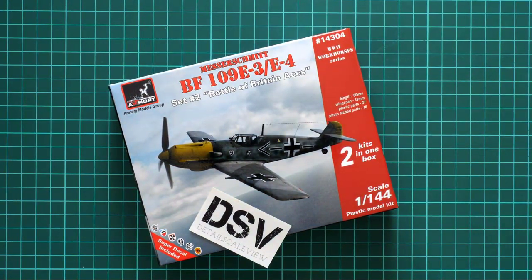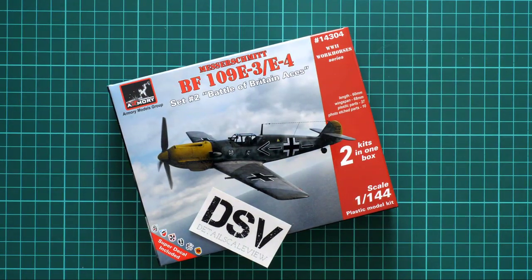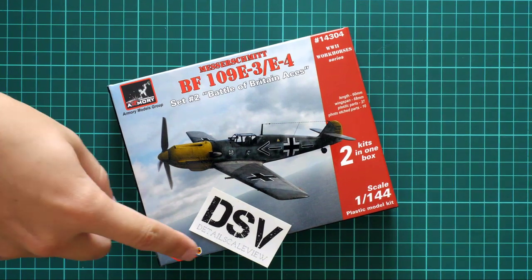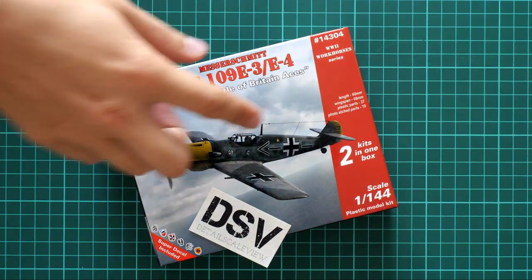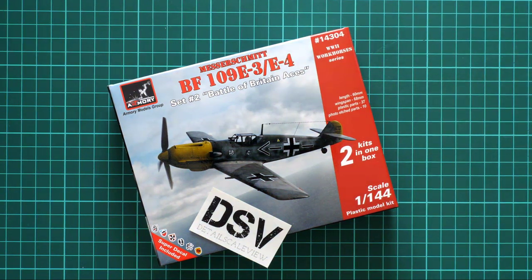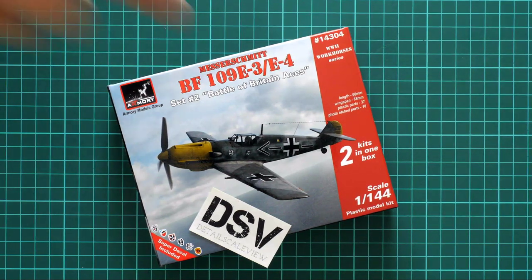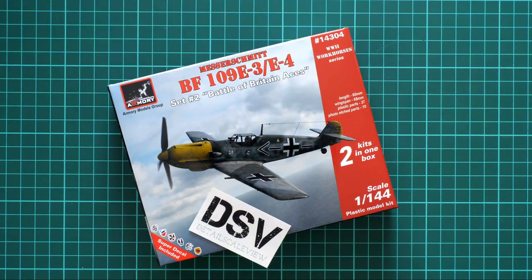I can guess that you can build both versions of this model. Here you can see that there are several markings inside and the assembled model should have a length of 60 millimeters and wingspan of 68 millimeters. There are 37 plastic parts and 10 PE parts as it's written here.